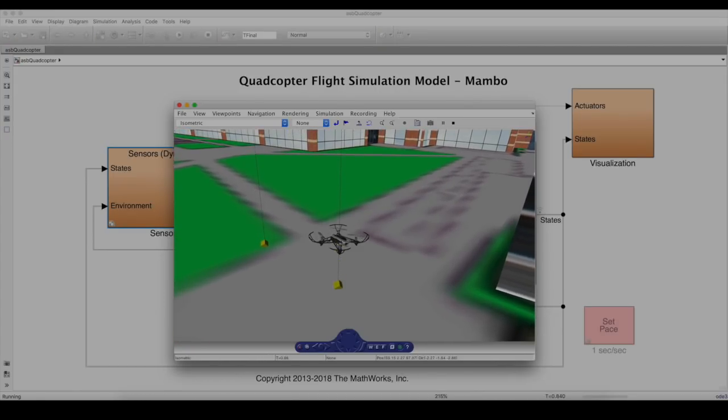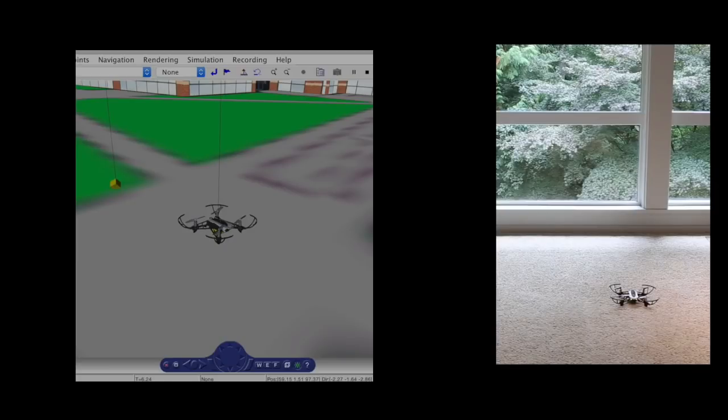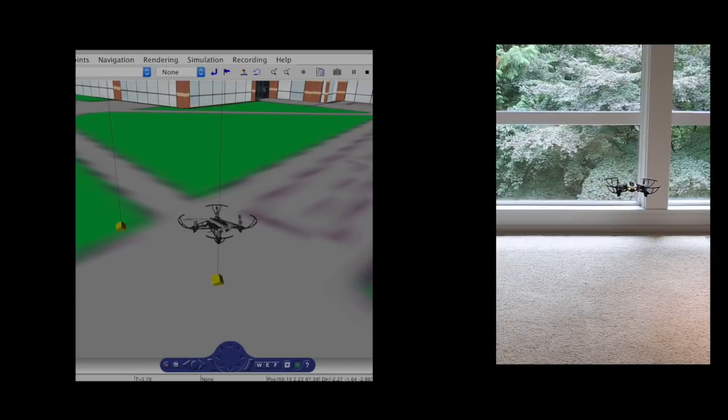And we could check the simulation data and compare it to the save data from the actual test that we ran in the last video. But in the interest of time, let's just compare them visually. I'll play the two results side-by-side so that we can see that this model is fairly close to reality, at least for this one test condition.